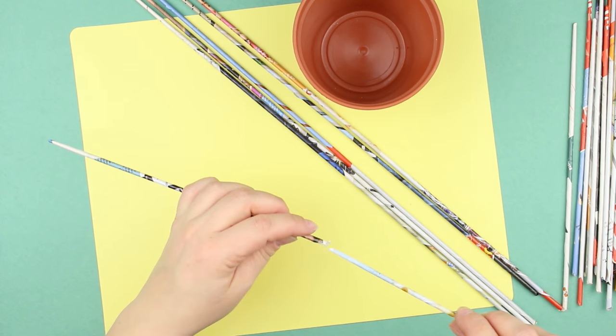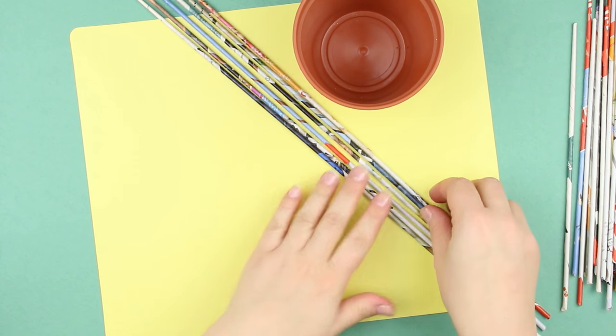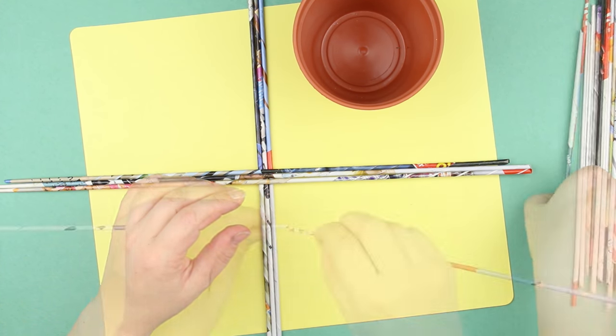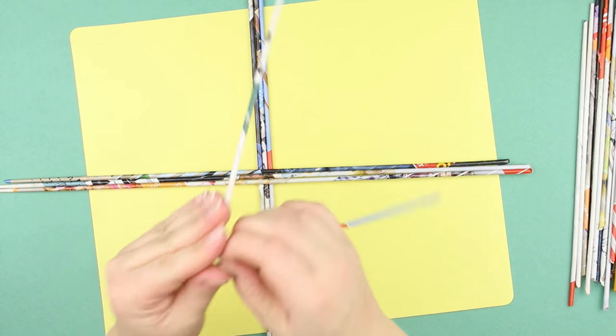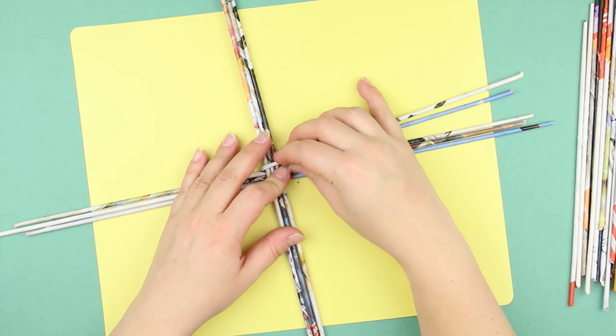Now, we should weave a pot. Make six extended frame stands. Place them criss-crossing per every three ones. Make another long weaving tube. Bend it in half. Start weaving around the three stands together first.